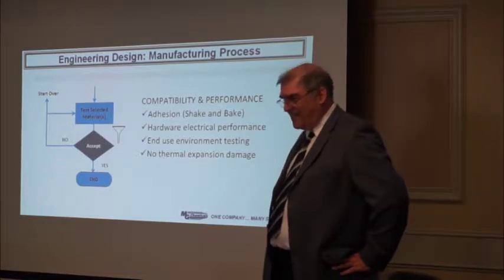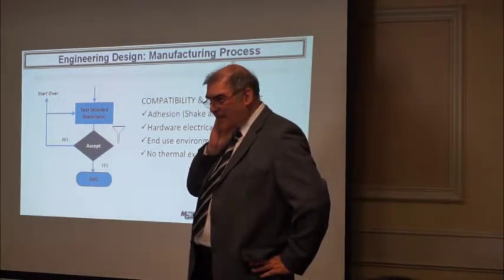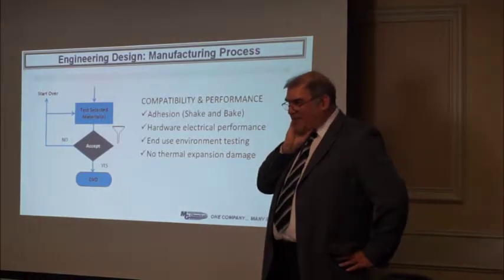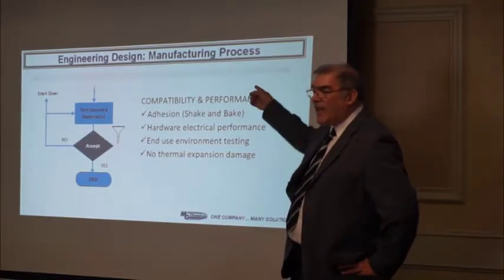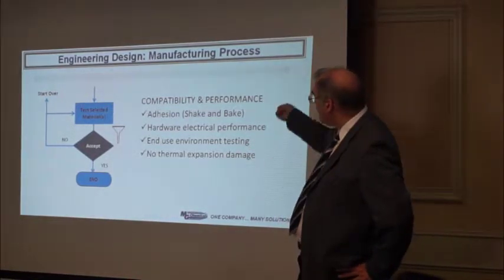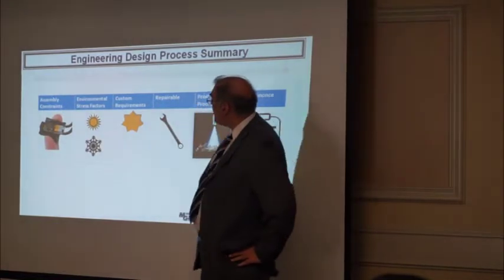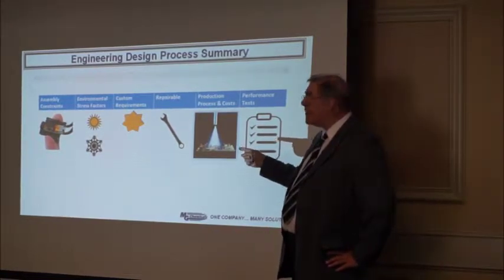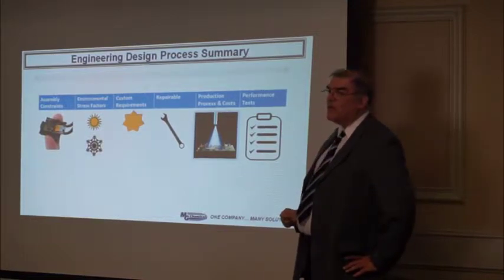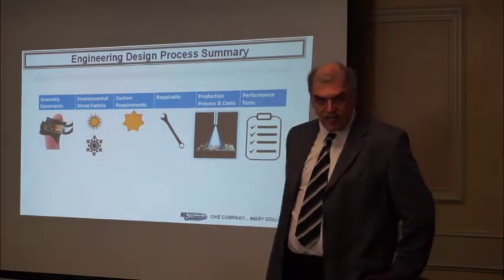That's the engineering design process with respect to material selection — it's probably more than you expected. People are always surprised at how many questions I ask. In summary, there are six components: assembly constraints, environmental stresses that are applicable, your specific requirements, whether the thing is going to be repairable or not, what your production process is, and the testing phase — which you're responsible for, but don't skip it.